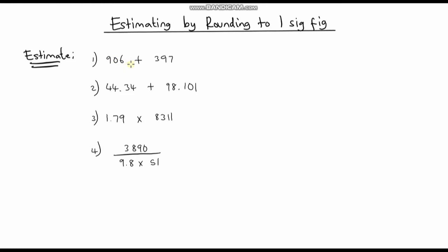So this first one here: 906 plus 397. Well, 906 rounded to one significant figure gives us 900, and we're going to add 397 rounded to one significant figure, which is 400. So we can say that 906 plus 397 is approximately equal to — and that is the symbol for approximately equal to — 900 plus 400.